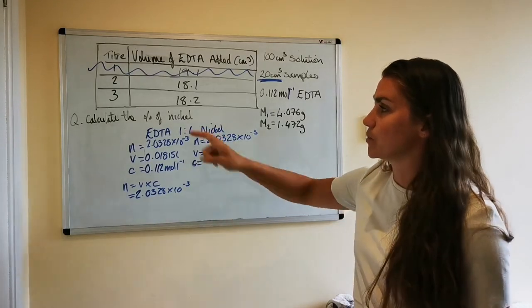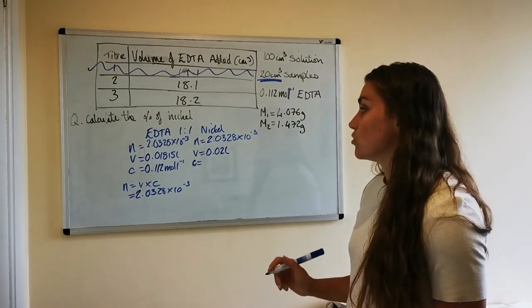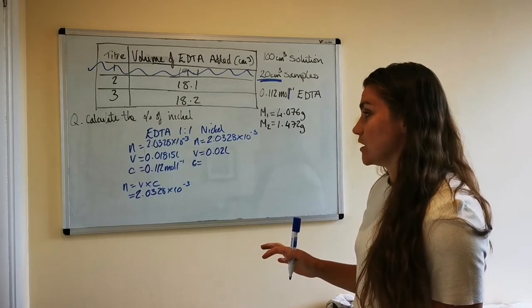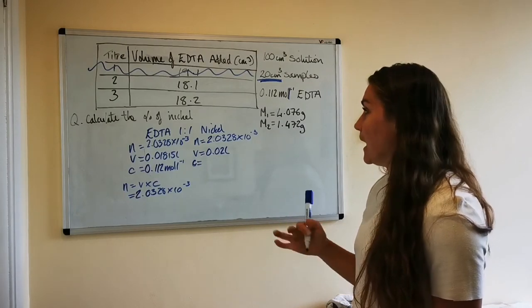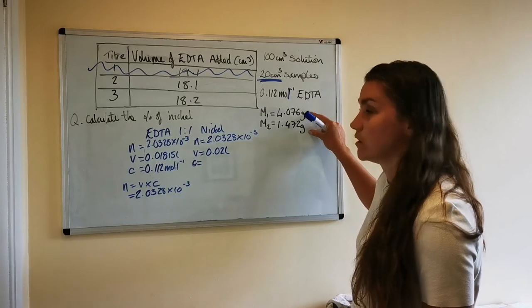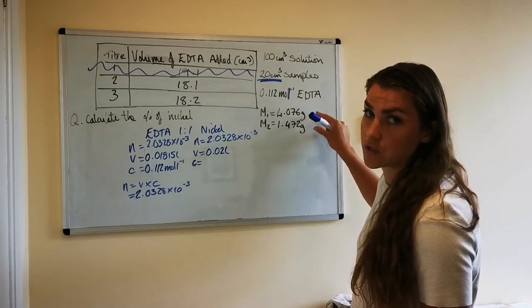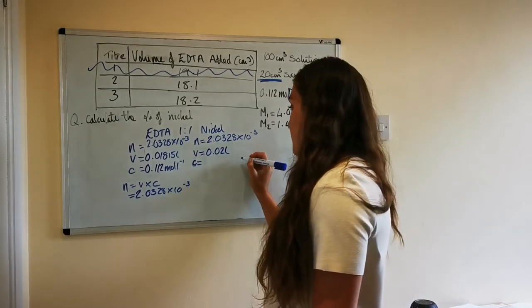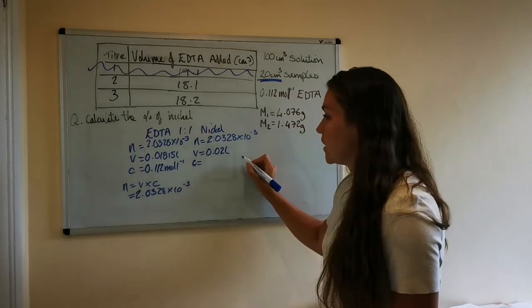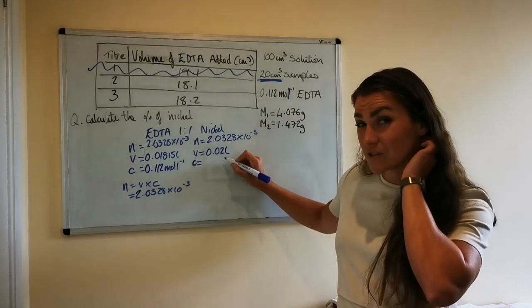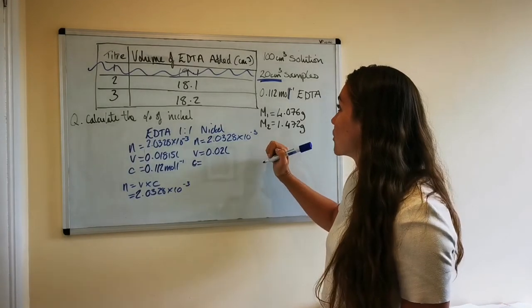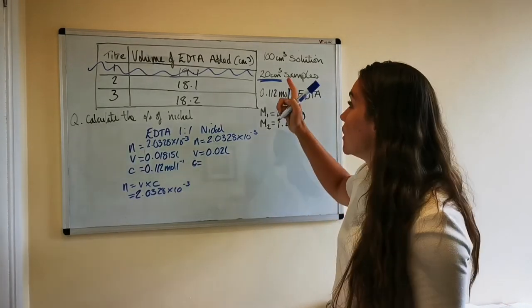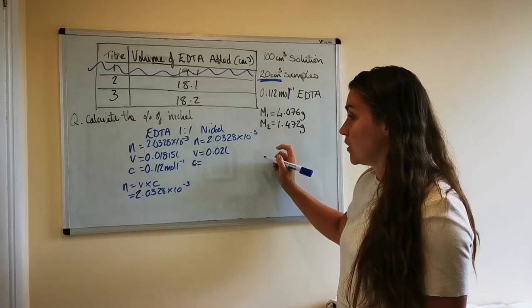Okay so that means if we were trying to calculate the concentration we just then do N over V, but we're trying to work out the percentage of nickel, so what we need to actually do is convert that into a mass because the amount of nickel sulfate that we used is in a mass. So the next bit - this is how many moles are in 20 cm³, okay, but we actually are wanting to know how much was in the whole solution, so this is where we need to scale up.